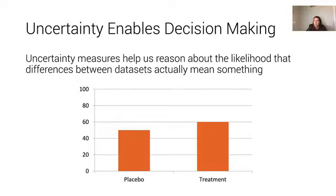For example, if I have the bar chart you see here, and on the left I have the average of measures from a placebo group, on the right I have the average of measures from a treatment group, I could ask you, does the placebo have a lower measure than the treatment?